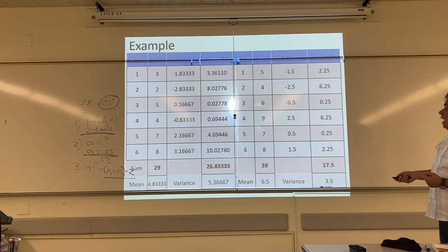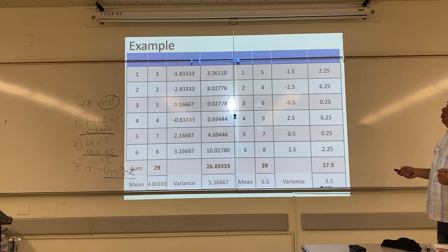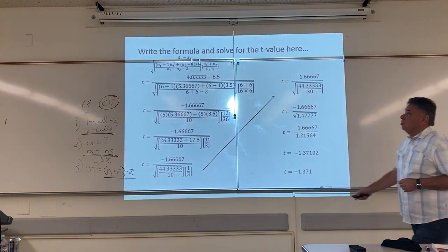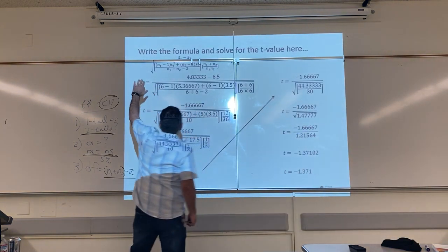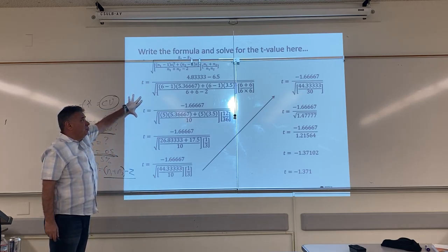All right. So I have the information that I need. I have the mean, the variance, and the sample size for both groups. I plug this information into my formula. Here's my formula. I wrote my formula out. I plug the numbers into my formula.